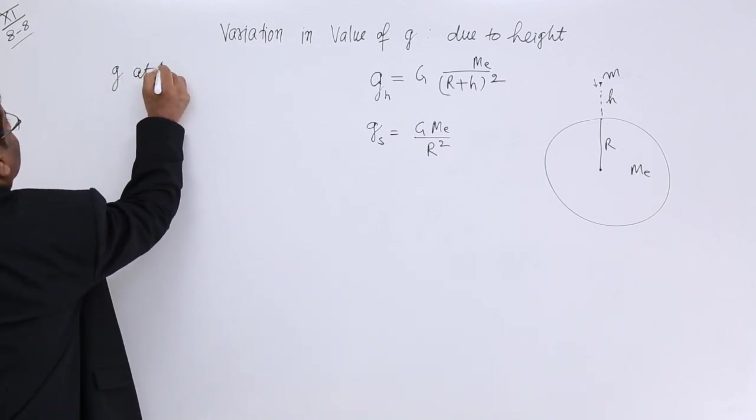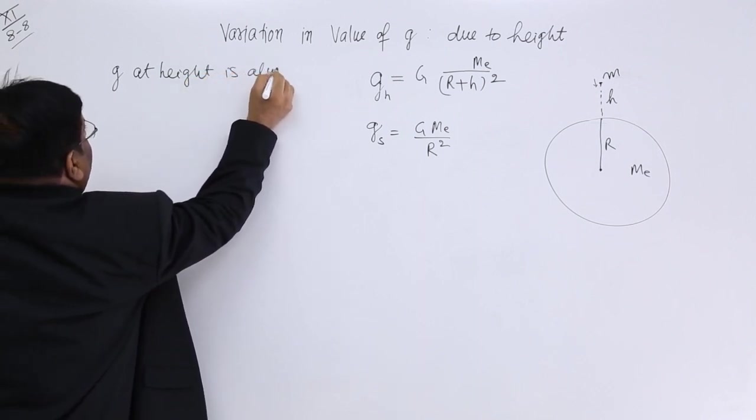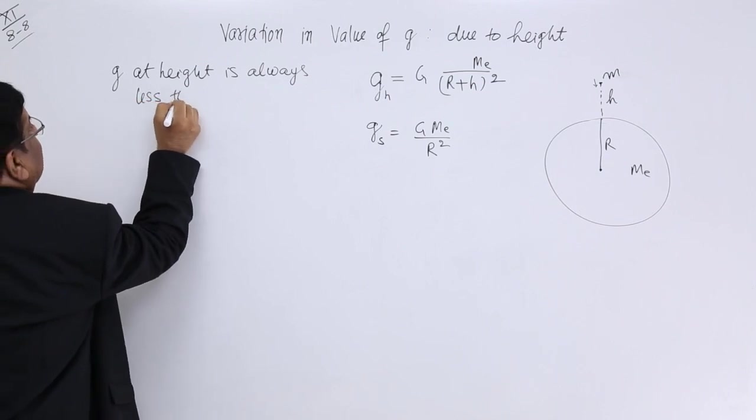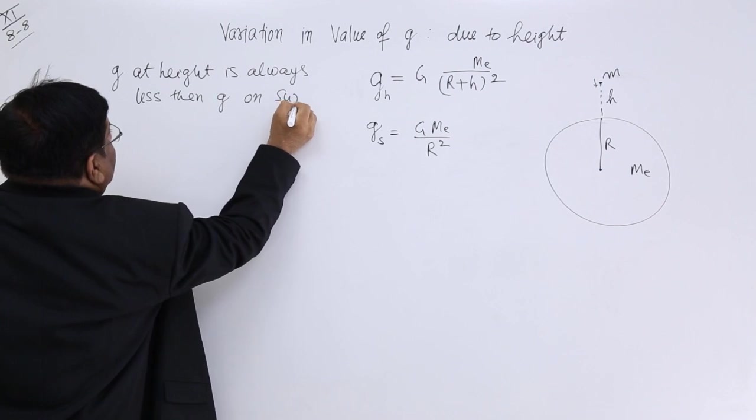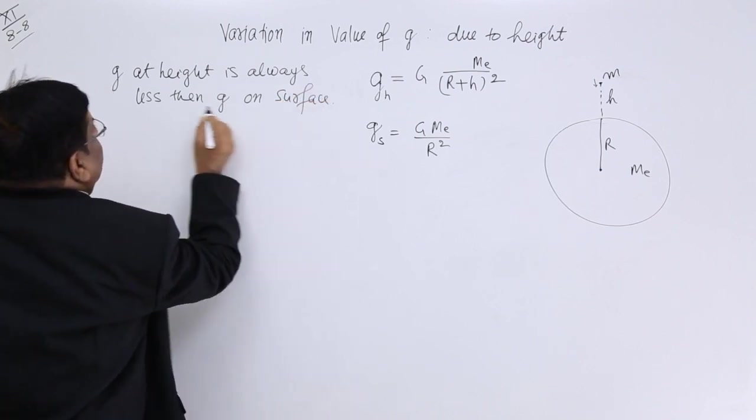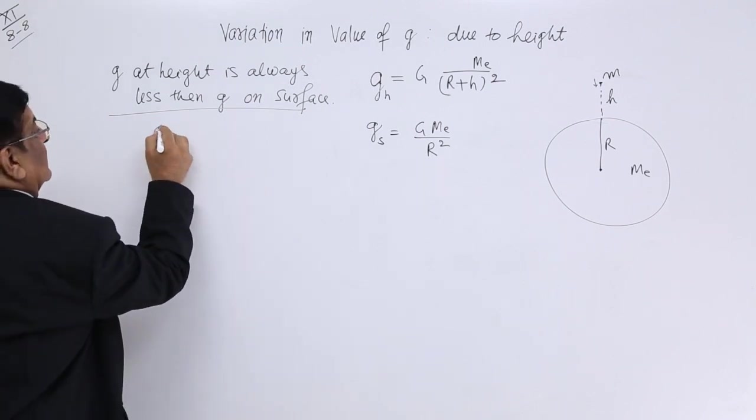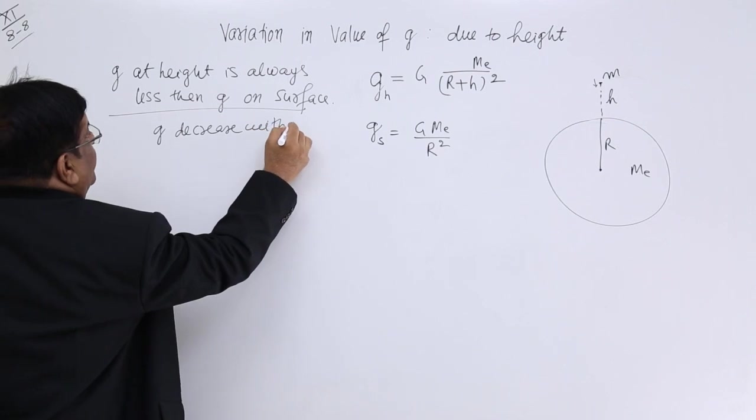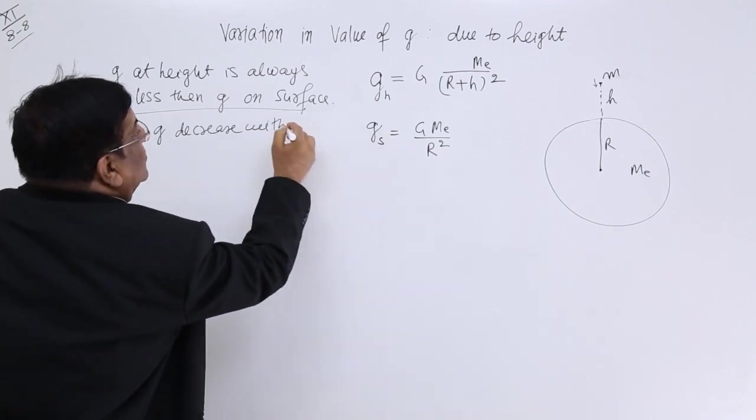The acceleration due to gravity at a height will always be less than acceleration at surface. G at height is always less than G on surface. So G decreases. And what is the formula? This is the formula.